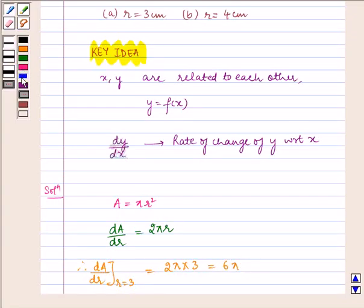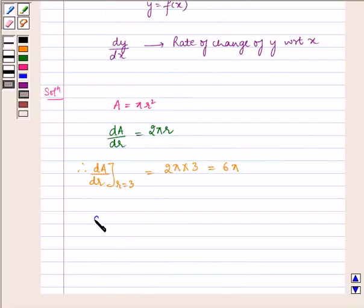Similarly, dA/dr at r = 4 equals 2π × 4, which equals 8π.